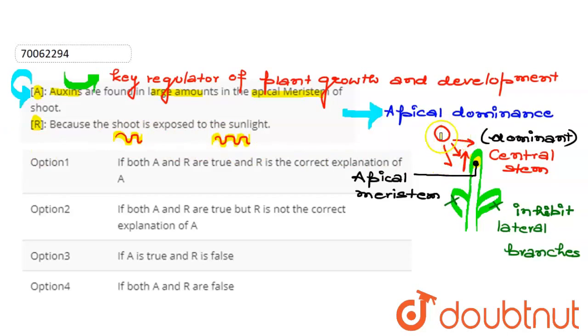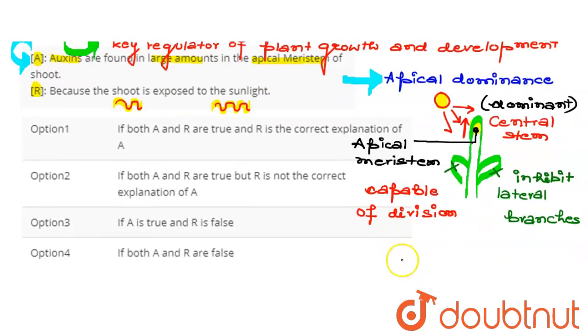But this is not the appropriate reason. The assertion is because apical meristem is capable of division and growth. But our auxins are also involved in elongation and differentiation. This is why auxins are present in the apical meristem of the shoot.